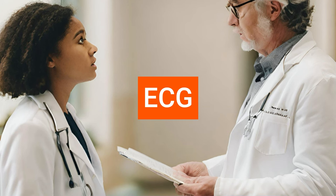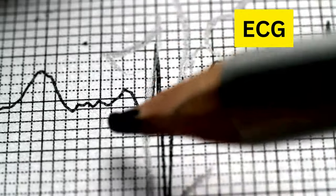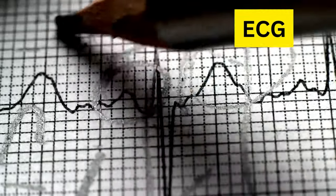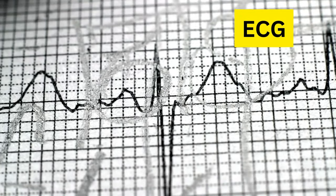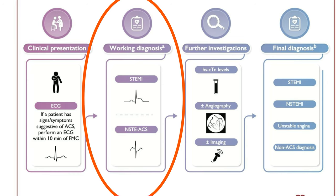The resting 12-lead ECG is the first diagnostic tool in the assessment of patients with suspected ACS. It should be obtained immediately upon first medical contact, interpreted by a qualified physician or technician within 10 minutes, and repeated as necessary. When first looking at the ECG of someone with acute chest pain, classify them into one of two broad categories: ST segment elevation or no ST segment elevation.